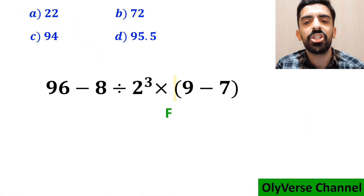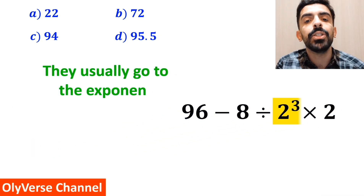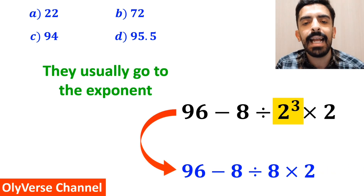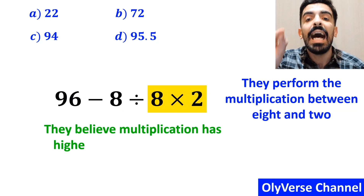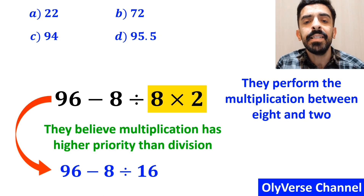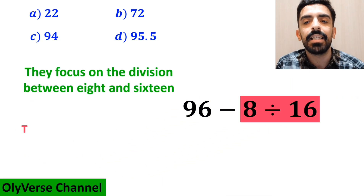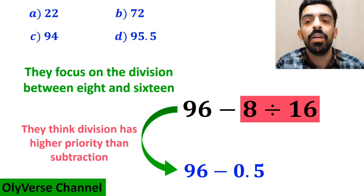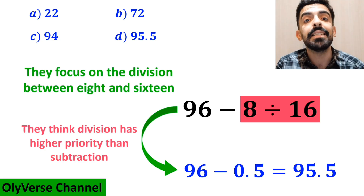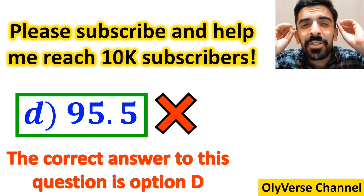Some other people, when solving this question, first focus on the expression inside the parenthesis and replace the whole expression with 96 minus 8 divided by 2 to the power of 3 multiplied by 2. In the next step, they go to the exponent and simplify it to 96 minus 8 divided by 8 multiplied by 2. Then they perform the multiplication between 8 and 2, believing multiplication has higher priority than division, rewriting the expression as 96 minus 8 divided by 16. Finally, they focus on the division between 8 and 16, rewriting the expression as 96 minus 0.5, which gives them 95.5, and they conclude the correct answer is option D. However, this answer is absolutely wrong!